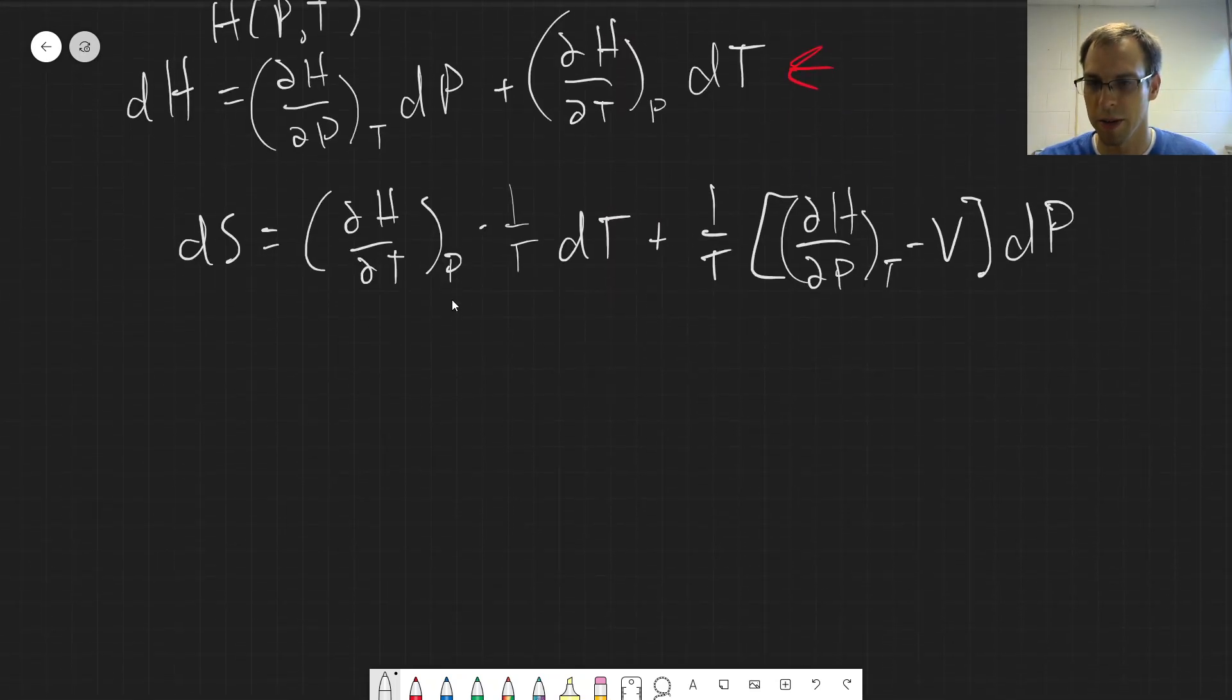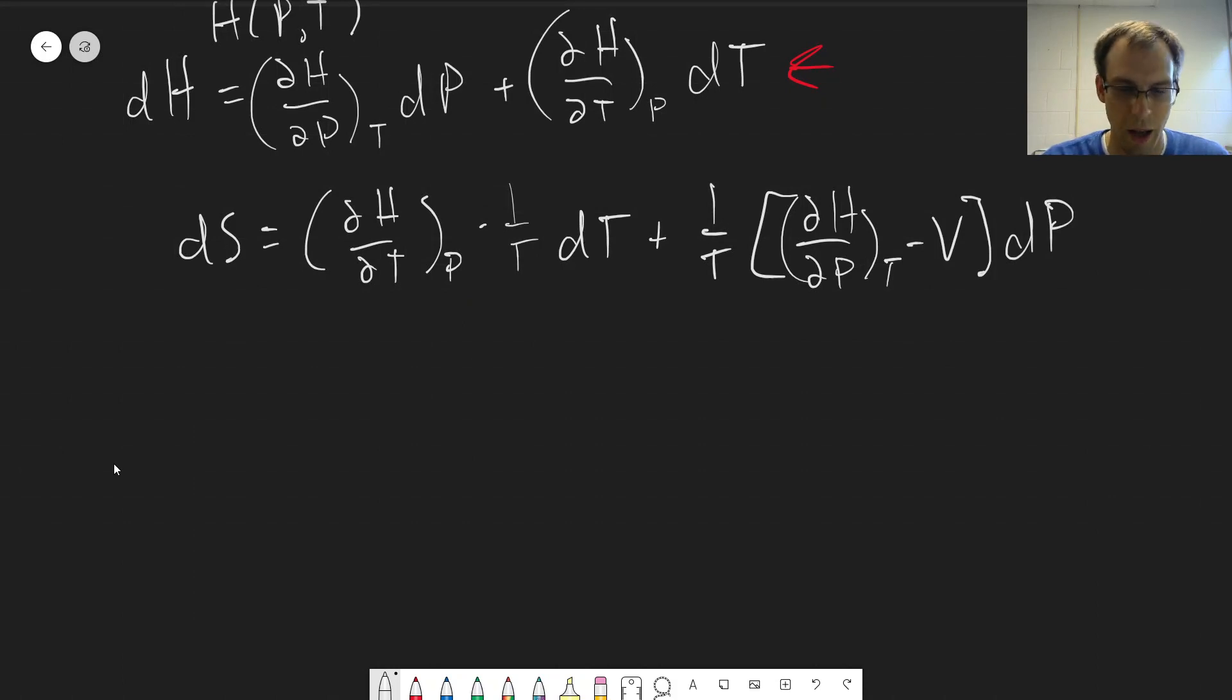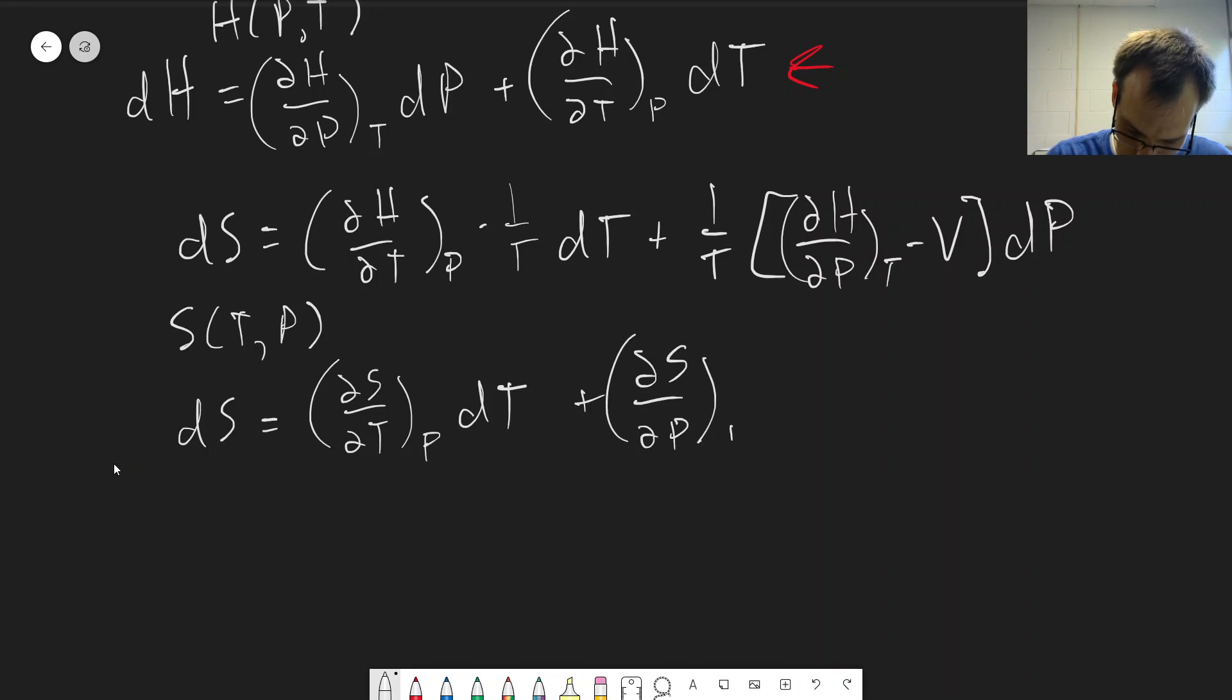And then we write out the total differential of S. S is a function of temperature and pressure. dS is equal to (dS/dT) at constant P dT plus (dS/dP) at constant T dP. And similar to what we did with the internal energy version of this, we have a part here that's equal to this partial derivative here. And we have this part here that's equal to this partial derivative here.